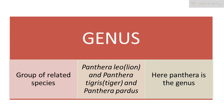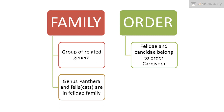Family is a group of related genera. Panthera, which includes leopard, tiger, and lion, along with Felis (cats), are included in the family Felidae. Order is a group of related families — Felidae (cat family) and Canidae (dog family) both belong to the order Carnivora.